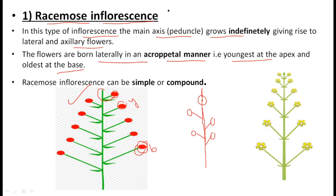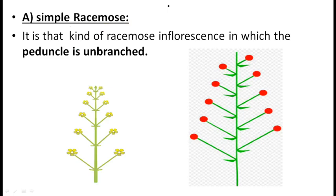Racemose inflorescence is of two subtypes on the basis of branching: first is simple racemose and second is compound racemose. In simple racemose the peduncle is unbranched and flowers are directly formed on this axis. In compound racemose the peduncle is branched — smaller peduncles are formed on the main peduncle, on which flowers are then formed.